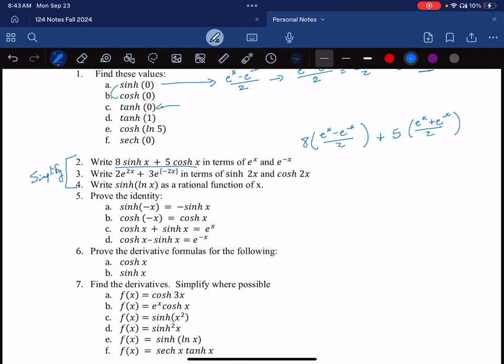So for sure, eight over two is four. So I'll get four e to the x minus four e to the minus x plus five halves e to the x plus five halves e to the minus x. Now I have like terms here and here, and then these two. So I'll just add or subtract the coefficients.